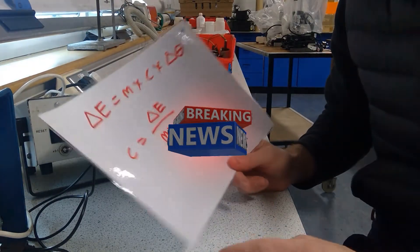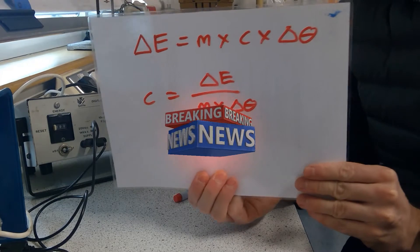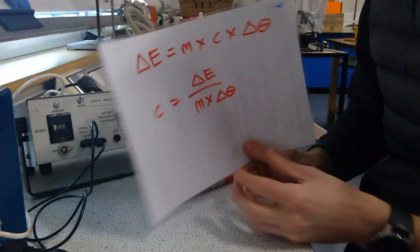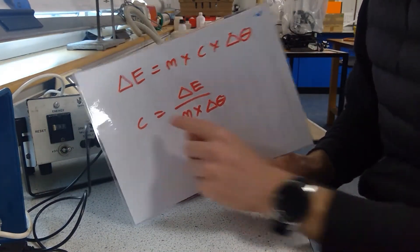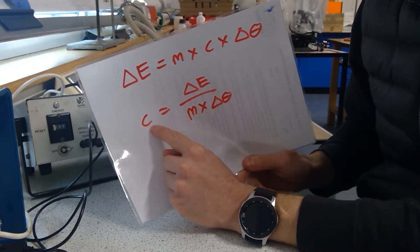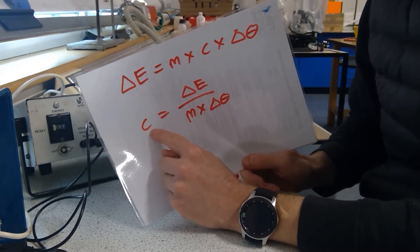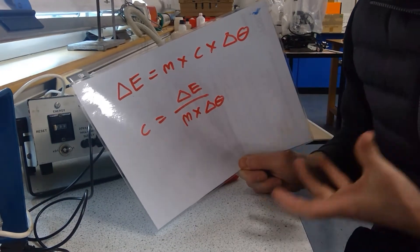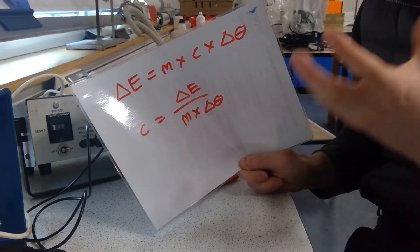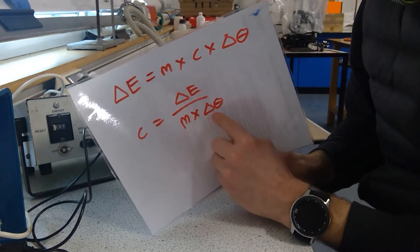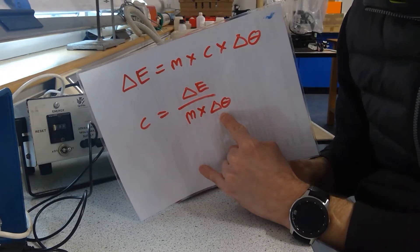Right guys, so basically if you remember this equation here, the one at the top, we can see that if we want to work out what the specific heat capacity is — which is C, C for capacity — we need to know the energy or the change in energy, the energy transferred to the object. We need to know the mass of the object and we need to know the change in temperature.